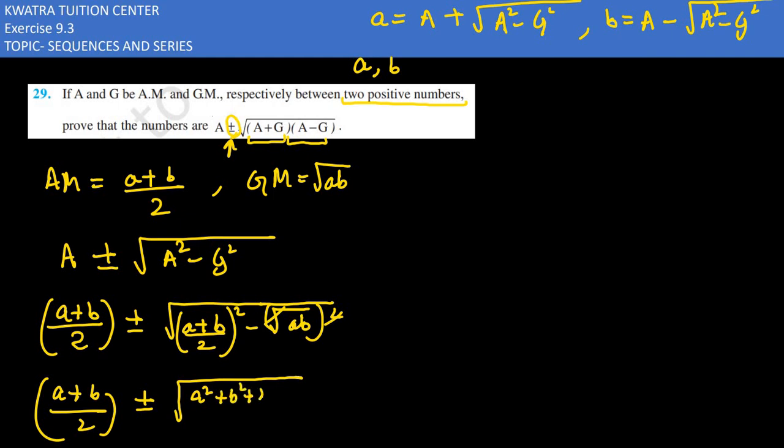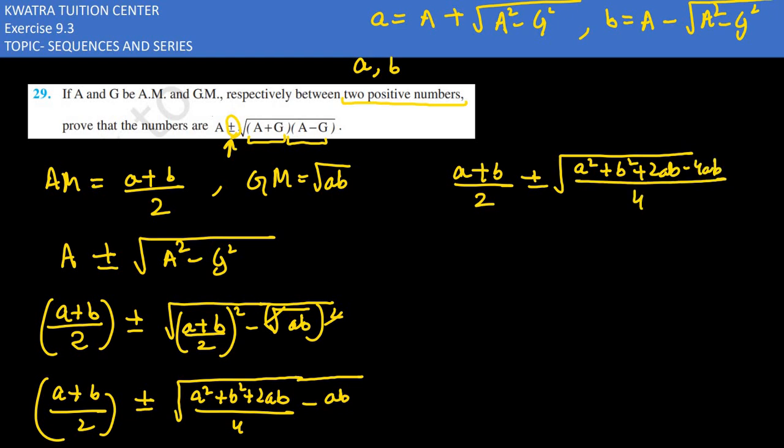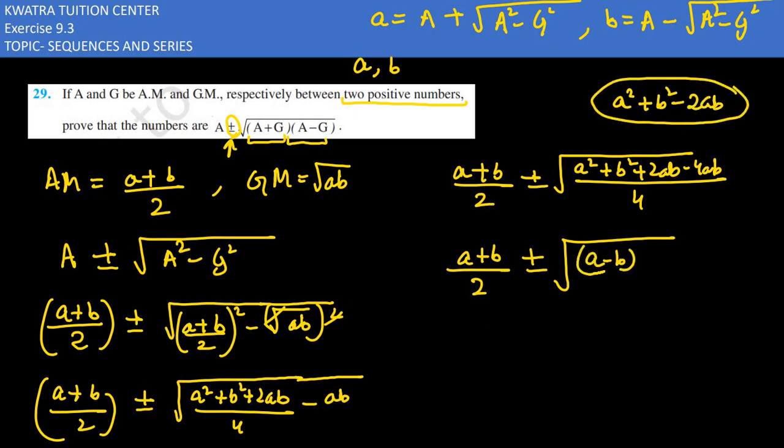Now what will we do here? A square plus b square plus 2ab minus 4ab. What will we do here? A square plus b square minus 2ab, which is nothing but a minus b whole square. So then what will we do here? Here we can write A square, so we can write A square over 4. To achieve root, so now we can write the root.